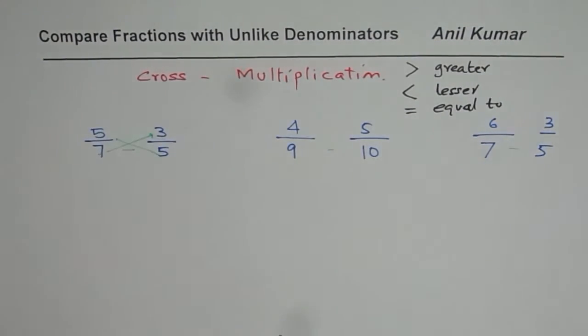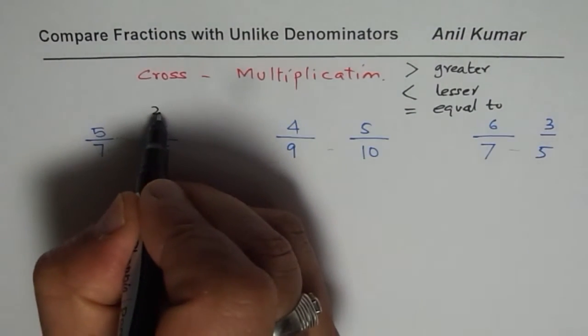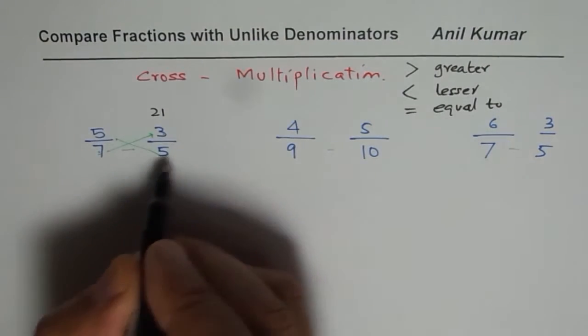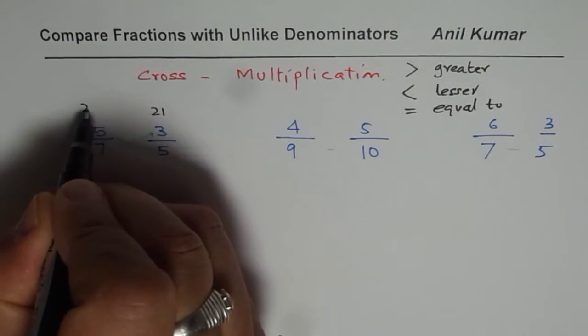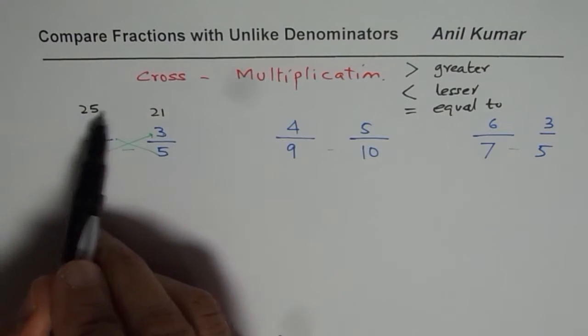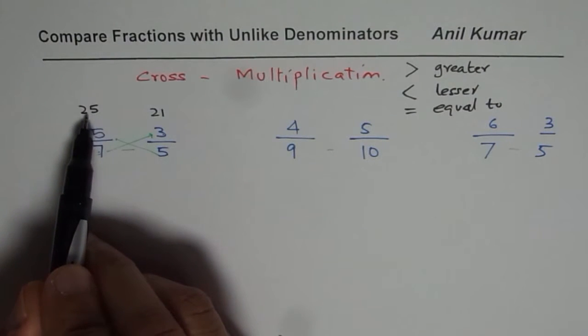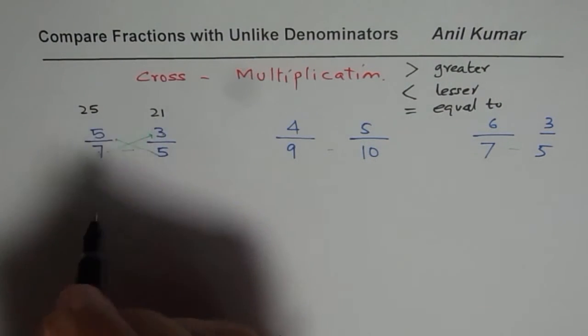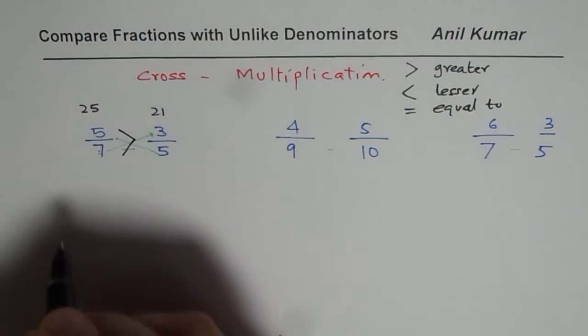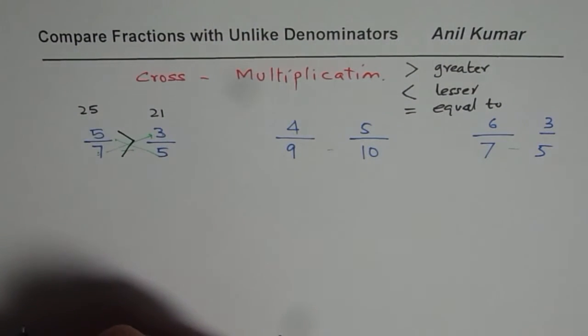So 7 times 3. When you do 7 times 3, what do you get? 21. So write 21 here, which is 7 times 3. 5 times 5 is 25. Now compare these two numbers. 25 is greater than 21, so we'll write greater than here. Do you get the idea?